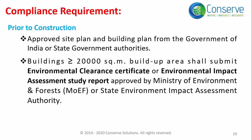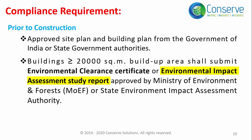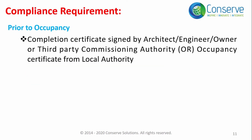In summary, requirements are classified into prior to construction and prior to occupancy. Prior to construction: approved site plan and building drawings, and if the project is 20,000 square meters or greater, an environmental impact assessment report or clearance from the environmental agency. Before occupancy: a completion certificate signed by the owner, architect, or commissioning authority, or a fit-to-occupy certificate from the local government agency.